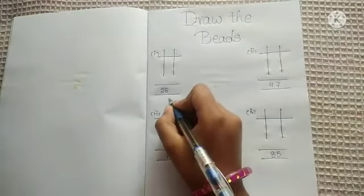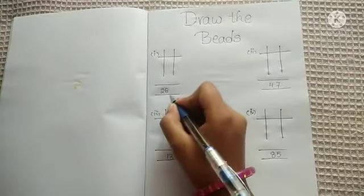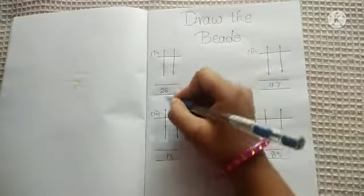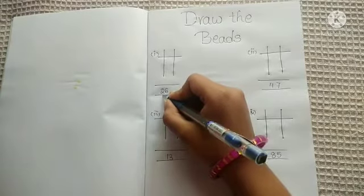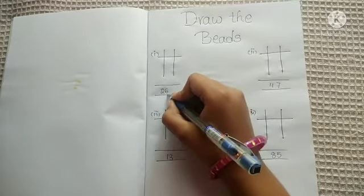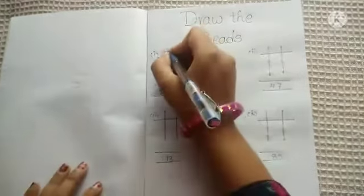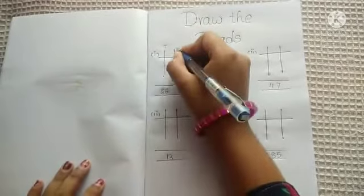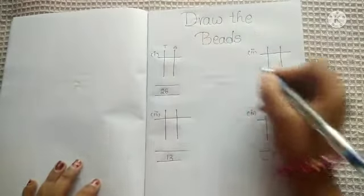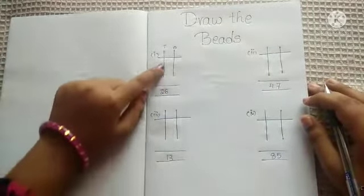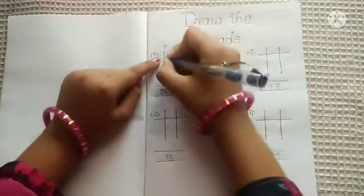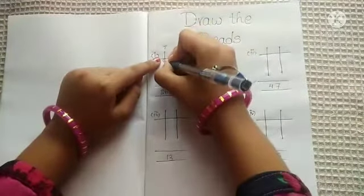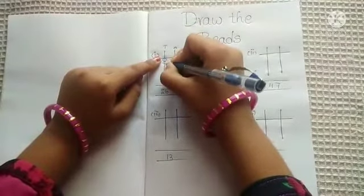In the first one they gave 26. So we have to draw the beads. In this number, the tens place number is 2 and the ones place number is 6. This is the tens place and this is the ones place. So we have to draw two beads in the tens place.